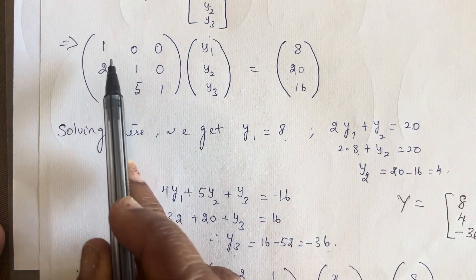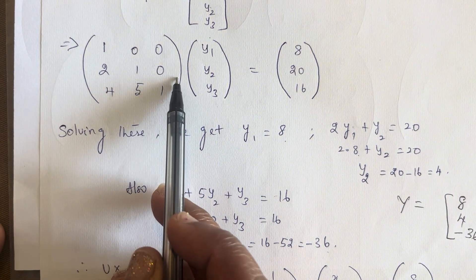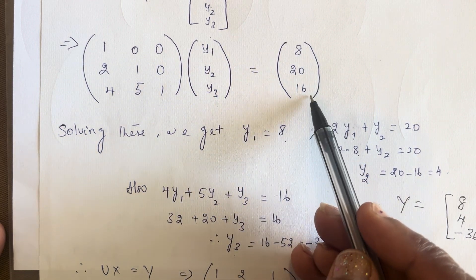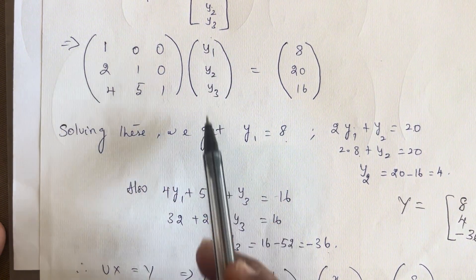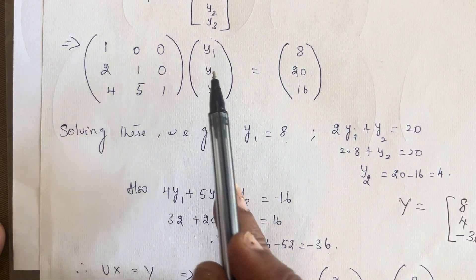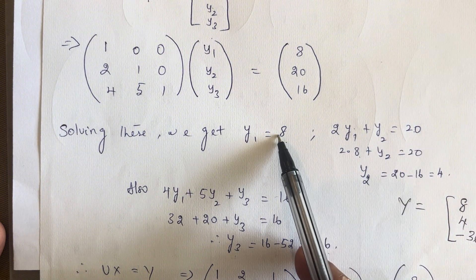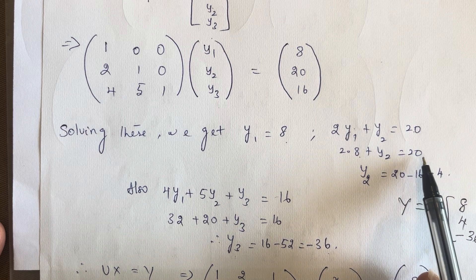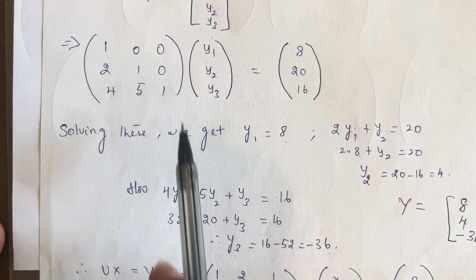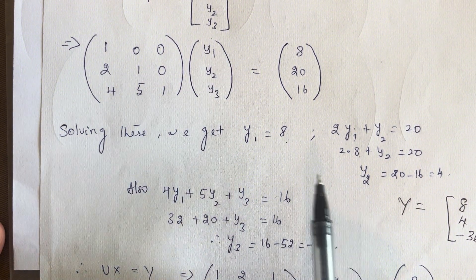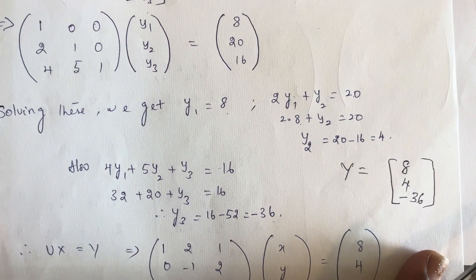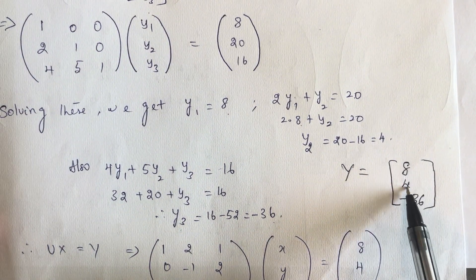With L = [1, 0, 0; 2, 1, 0; 4, 5, 1], Y = [Y1; Y2; Y3], and B = [8; 20; 16], solving LY = B by matrix multiplication gives: Y1 = 8. Then 2·Y1 + Y2 = 20; substituting Y1 = 8 gives 16 + Y2 = 20, so Y2 = 4. Then 4·Y1 + 5·Y2 + Y3 = 16; substituting Y1 = 8 and Y2 = 4 gives Y3 = -36. So Y = [8; 4; -36].